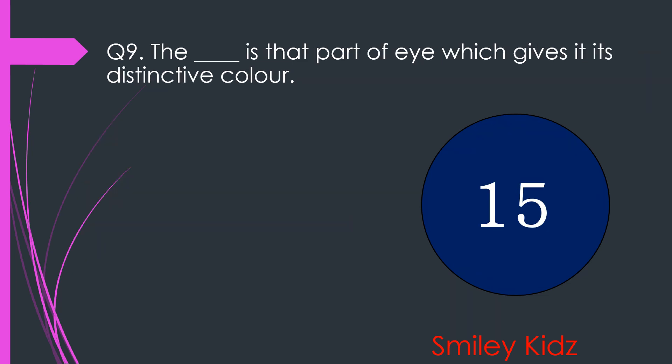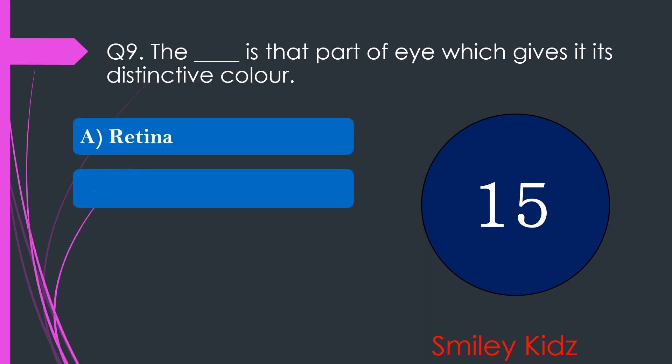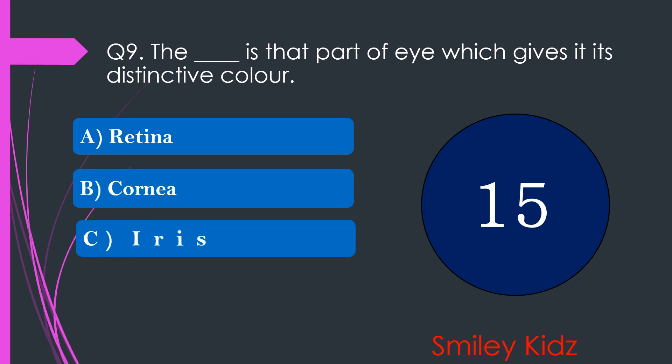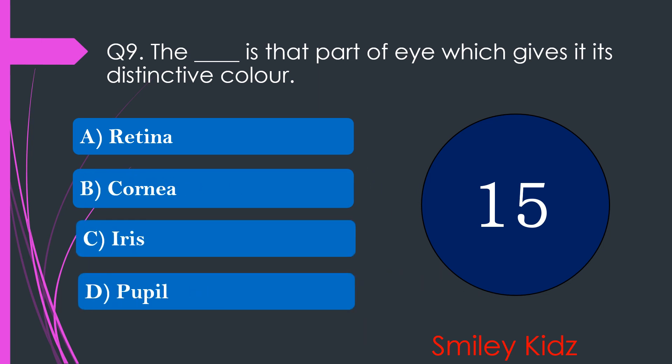Question number 9. The dash is that part of an eye which gives it its distinctive color. The options are A. Retina, B. Cornea, C. Iris, or D. Pupil. Your time starts now.